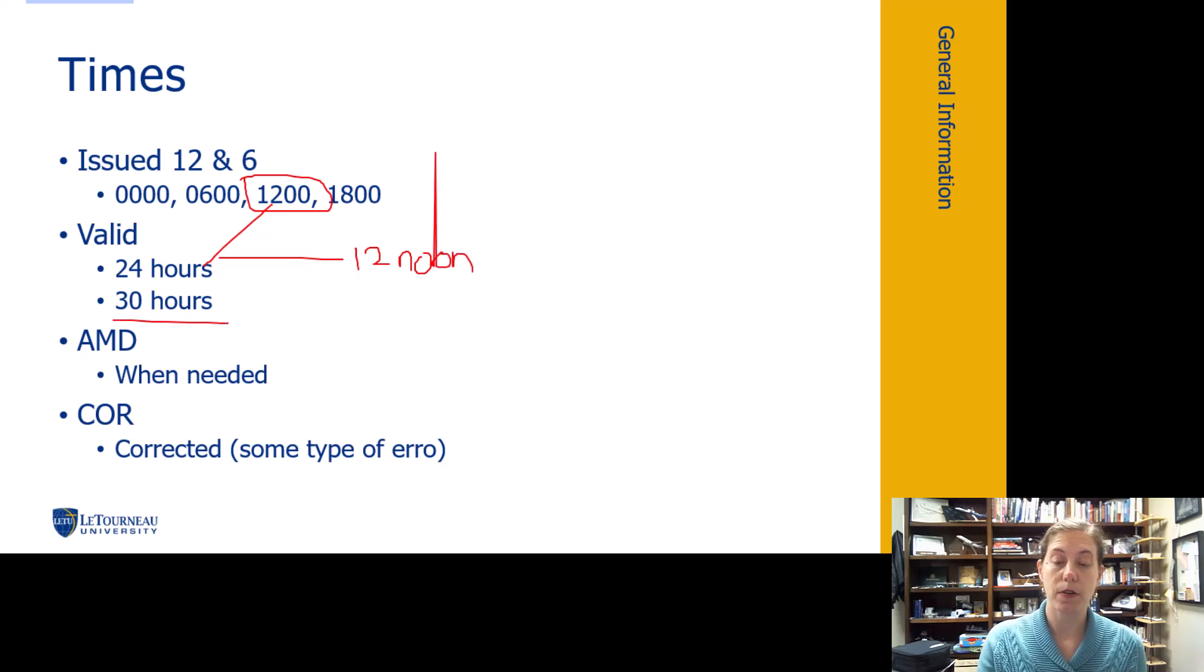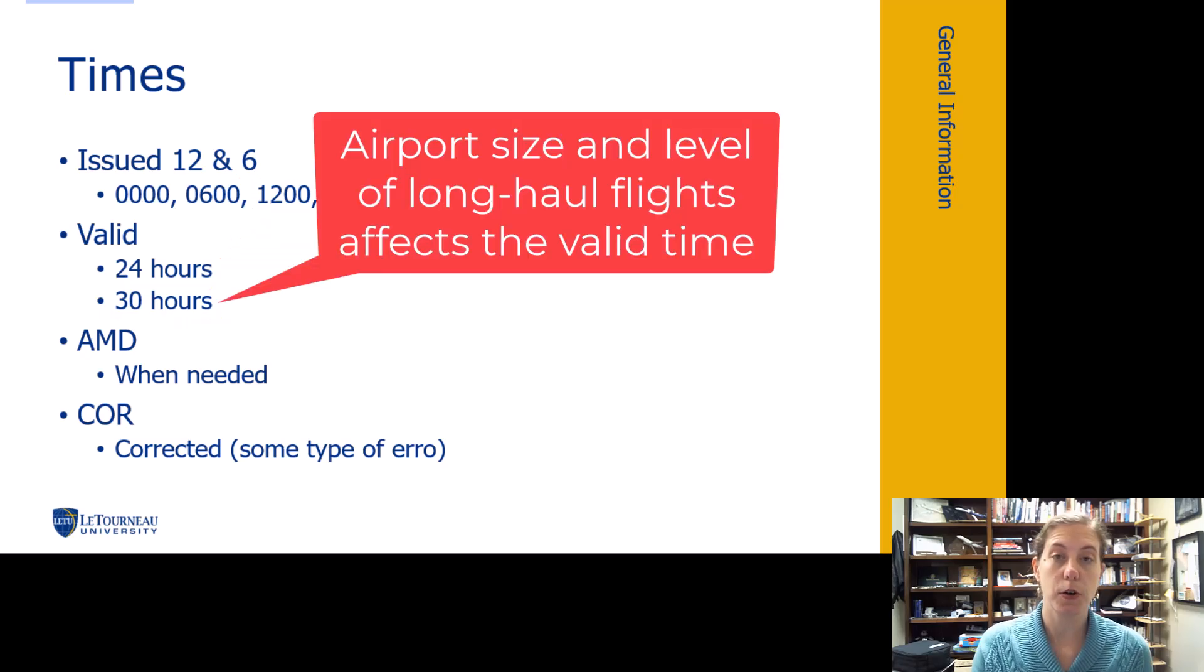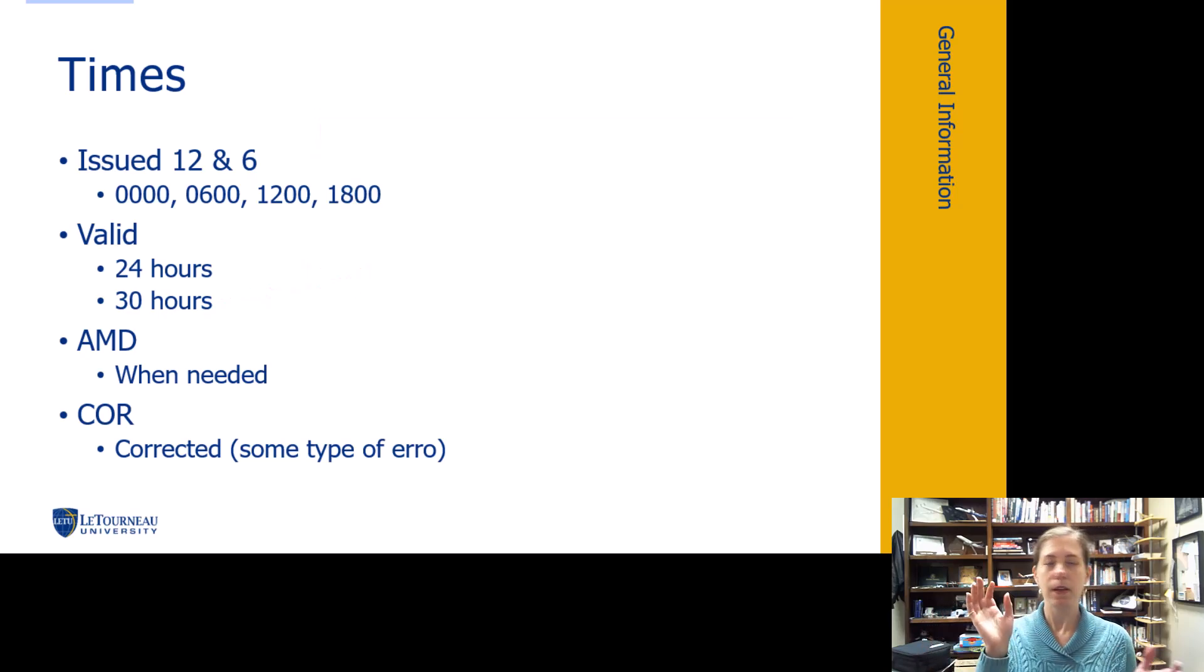For a 30 hour TAF, these are often issued at international airports. So you will find them at places like Los Angeles, JFK. The reason is because we have international flights coming from much farther away, may have a 15 hour flight coming in. They would like a longer outlook of what is going on with the weather at their airport. So you find these generally at international airports with long haul flight arrivals. These are the 30 hour TAFs. Not to worry to know which one it is because I'll show you how it's listed right in the TAF itself.